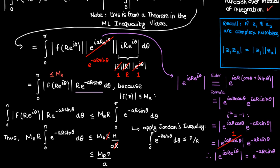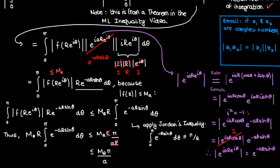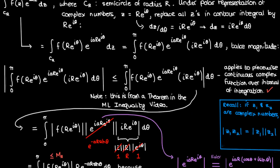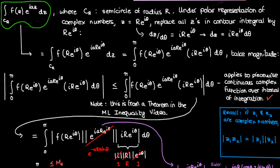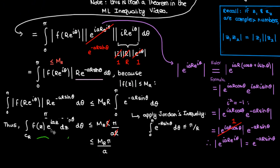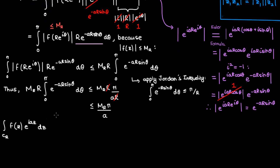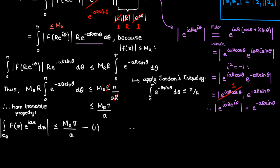We're almost done. Throughout this proof we've used a fairly long chain of equalities and inequalities. Going back to the start of the chain — the integral over contour C_R of f(z)·e^(iaz) — and copying it down below, from all the computations and simplifications involving equality and less-than-or-equal signs, the transitive property of inequality tells us that the magnitude of the contour integral over C_R of f(z)·e^(iaz) is less than or equal to M_R times π/a. I'll label this inequality as (1).